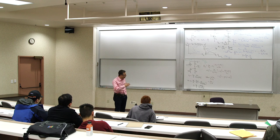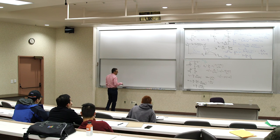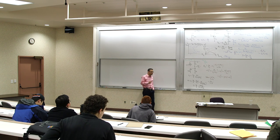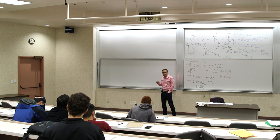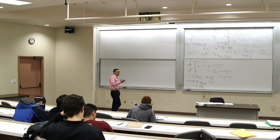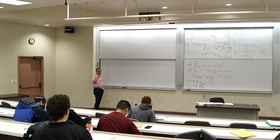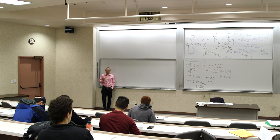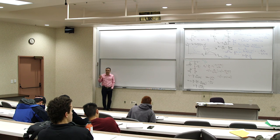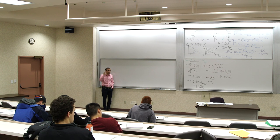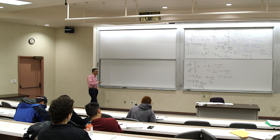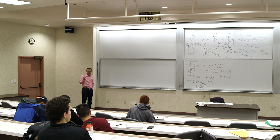Before the break we talked about the common source stage with and without degeneration and with different kinds of load extensively. Now we're going to quickly talk about the other two stages, which should be relatively simple to cover based on what we've done so far. Then we'll use those to develop further, more complex stages. These stages are essentially the Lego building blocks of bigger designs. It's very important to know what your building blocks look like and how they behave. These units are the basic ingredients of design.